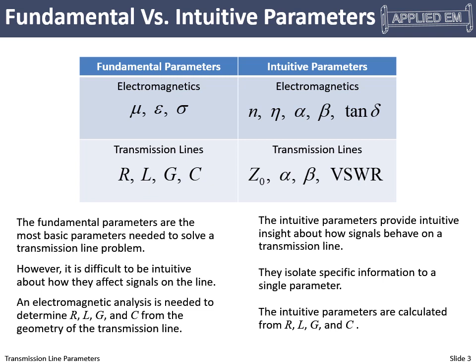We had a similar discussion when we were talking about electromagnetic waves. We had the permeability, permittivity, and conductivity, and we said those are fundamental to Maxwell's equations, but given the numbers, we can't really look at them and interpret anything meaningful about what they do to a wave. So instead, we calculated more intuitive parameters like refractive index, impedance, attenuation coefficient, phase constant, and loss tangent. A similar thing is happening here — the fundamental parameters are R, L, G, and C, but given those numbers, we can't easily interpret how they affect signals on the transmission line.